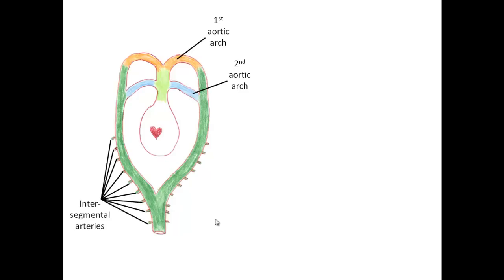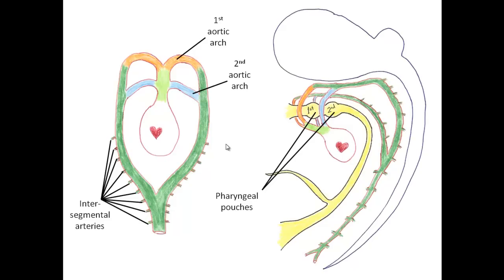At this point we're getting intersegmental arteries — small branches stretching out to supply surrounding tissue. The most important is the seventh intersegmental artery, which we'll get to shortly. From the oblique view, the first and second arches run dorsally to reach the dorsal aorta, and they've also pinched off the first and second pharyngeal pouches from the developing gut tube — a topic for another lecture. Intersegmental branches jump off the dorsal aorta thereafter.